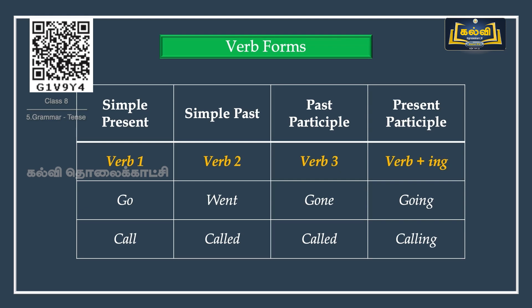Before we learn all the tenses, we must be aware of all the verb forms. Verb one is present simple, verb two is simple past, verb three is past participle, and verb plus ing is present participle. There are two kinds of verbs. For example: go, went, went, gone, going. And another example: call, called, called, called, calling. Most verbs in English are regular — you need to add only -ed at the end to make verb two and verb three forms. But there are a few irregular verbs that do not follow the -ed adding system.